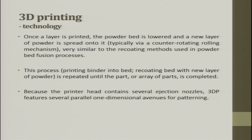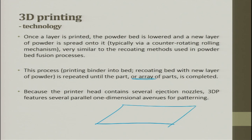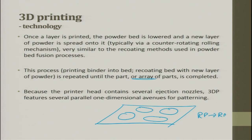Till now I did not talk about this array of parts. In a single bed, you can make multiple parts growing simultaneously. This is where we are now talking about rapid prototyping to rapid manufacturing. You have optimized the space and placed the parts to be printed such that you can get 4, 6, or 10 in one shot. An array of parts is completed because the printing head contains several ejection nozzles, and 3D printing features several parallel one-dimensional avenues for patterning.